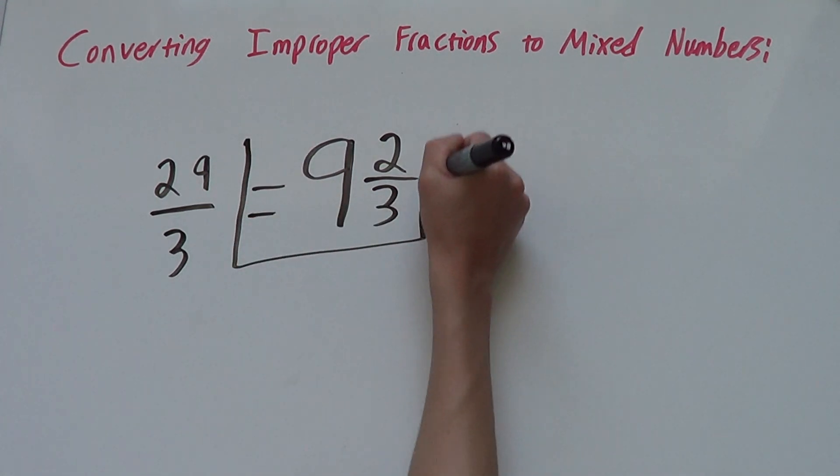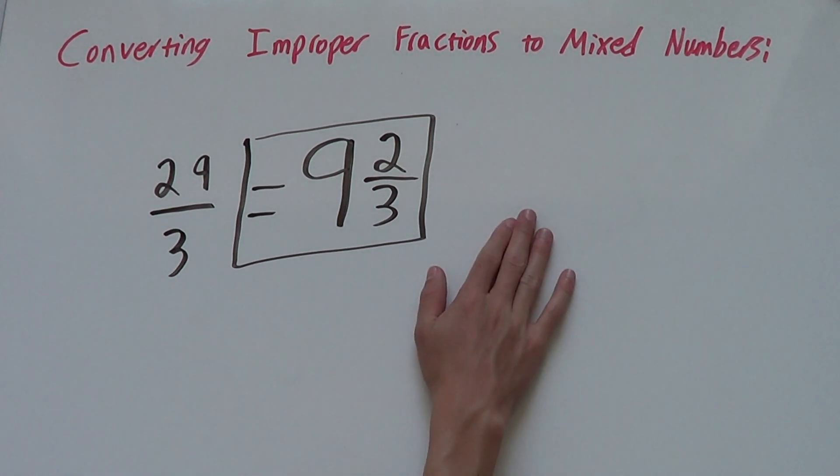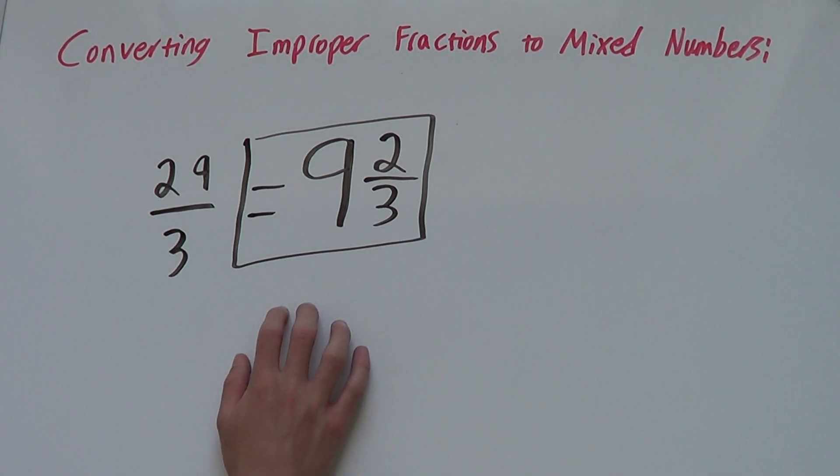So our mixed number will be 9 and 2 thirds. So it's a bit harder to do it without writing it all out but it's much more efficient. So I encourage you to try to do that.